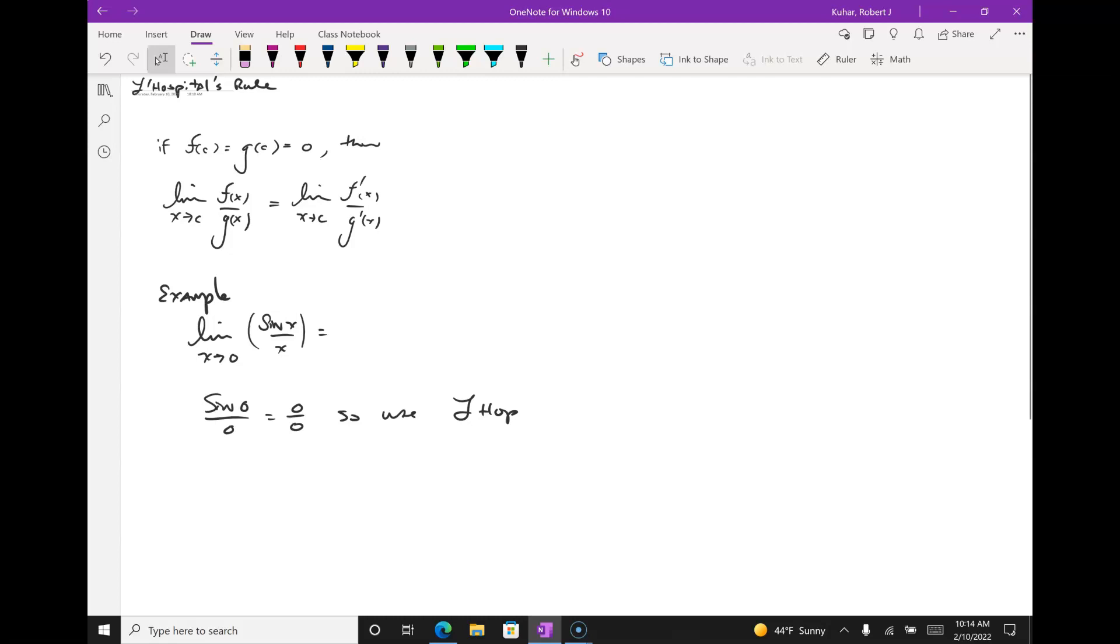So, once we know we can use L'Hopital, I want to indicate that I'm going to take a derivative of the numerator and a derivative of the denominator. I can either use the d/dx operator or I can use the prime symbol. So, this is going to be the limit as x goes to zero of sine of x prime over x prime.